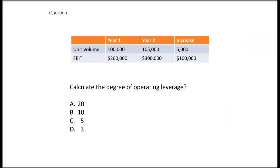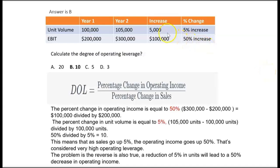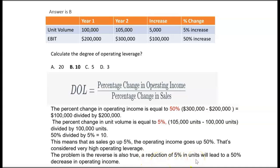On the exam they might give you data and ask you to calculate the DOL. For example: unit volume increased by 5% (5,000 over 100,000), and EBIT increased 50% — from $200,000 in year one to $300,000 in year two. Taking 50% divided by 5% gives a DOL of 10 — very high operating leverage. The problem is the reverse is also true: a 5% reduction in unit sales leads to a 50% decrease in operating income.